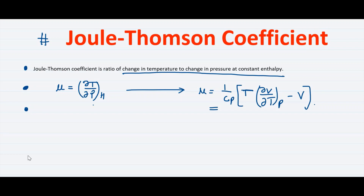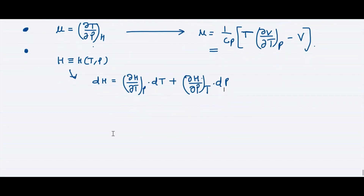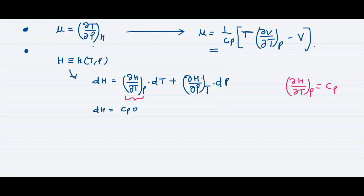We know that enthalpy H is a function of temperature and pressure. So we can write dH equal to (∂H/∂T) at constant pressure times dT, plus (∂H/∂P) at constant temperature times dP. We know that (∂H/∂T) at constant pressure is nothing but Cp, the heat capacity at constant pressure. So we write dH equal to Cp dT plus the second term.